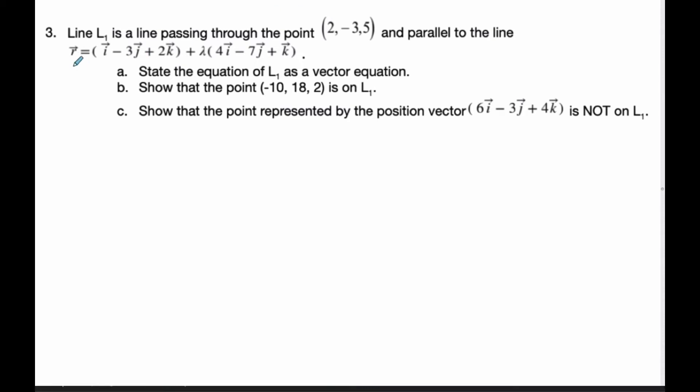We're given that line L1 passes through the point (2, -3, 5) and is parallel to this line. So here's my point, and here is the line.